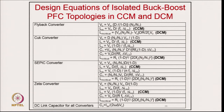For all four converters — flyback, CUK, SEPIC, and Zeta — the relations for output voltage, magnetizing inductance, and component calculations are given for both DCM and CCM. The output capacitor relation — depending on load resistance, line frequency, and percentage ripple voltage — remains common to all these converters since the second harmonic ripple on the DC link applies in all cases.